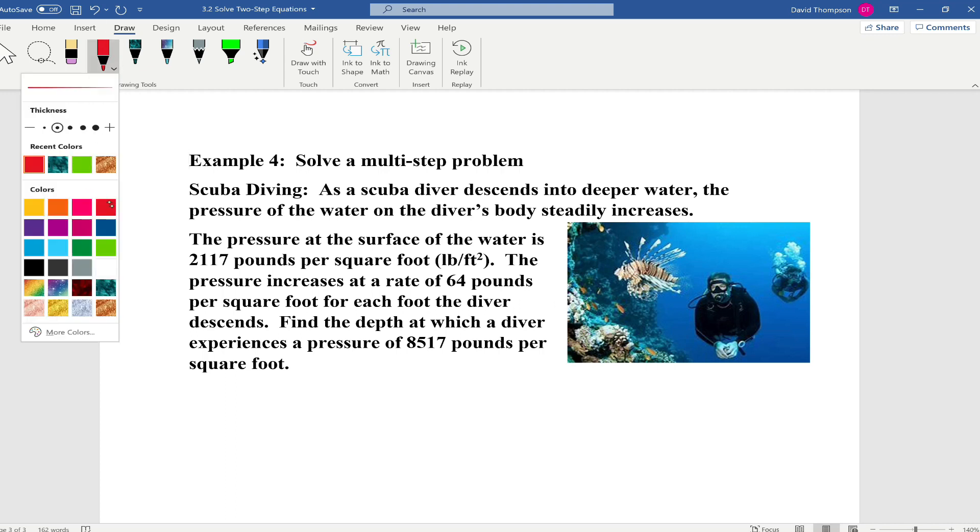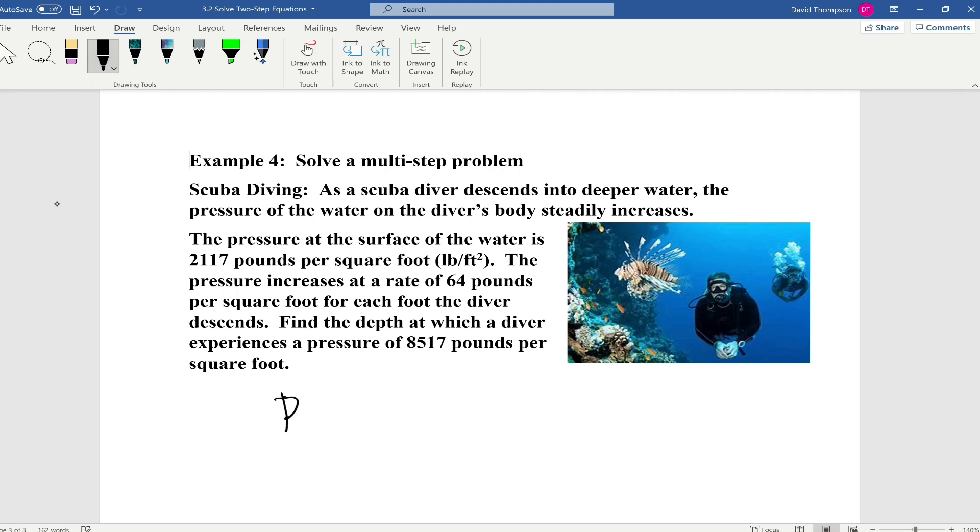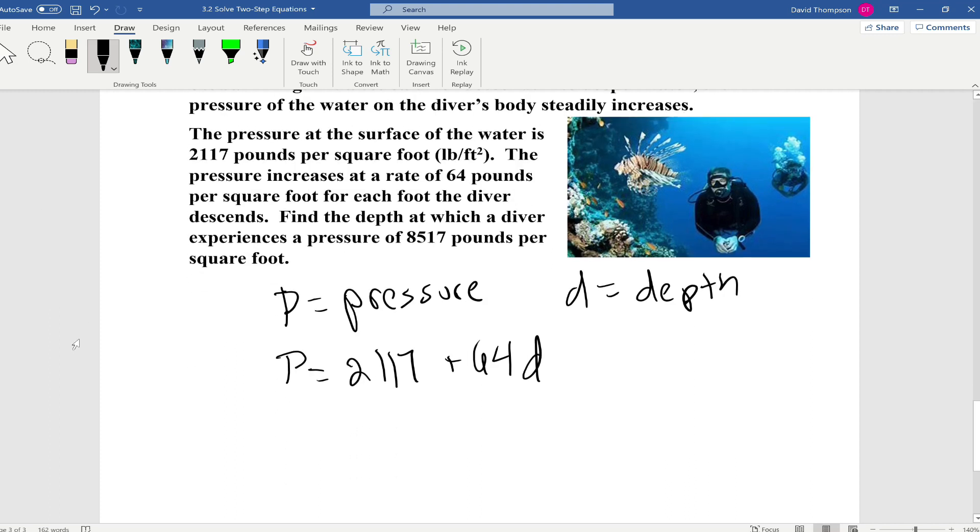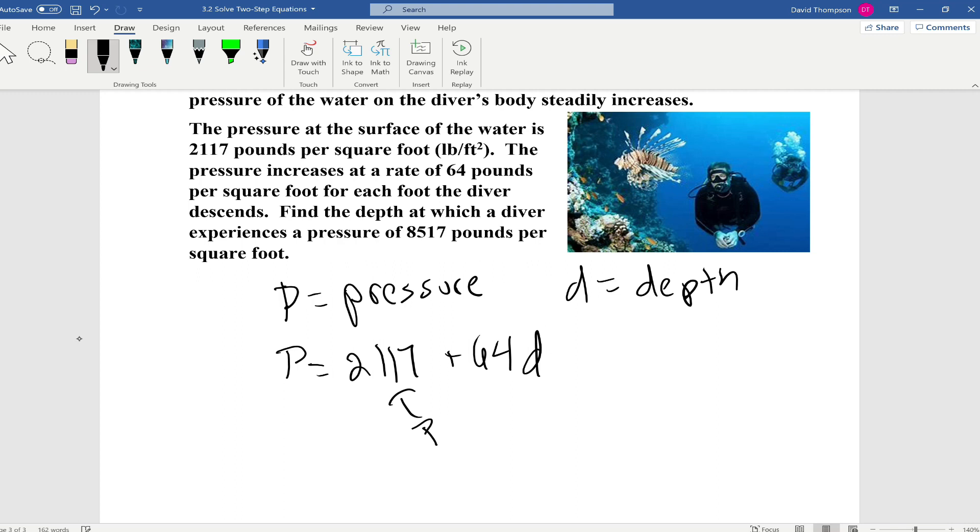Let's just write a general equation. We'll call p equals pressure. And we'll call our other variable d equals depth. So our general formula is p equals 2,117 plus 64d. So this is my pressure at surface. And this is the rate of change in my pressure.